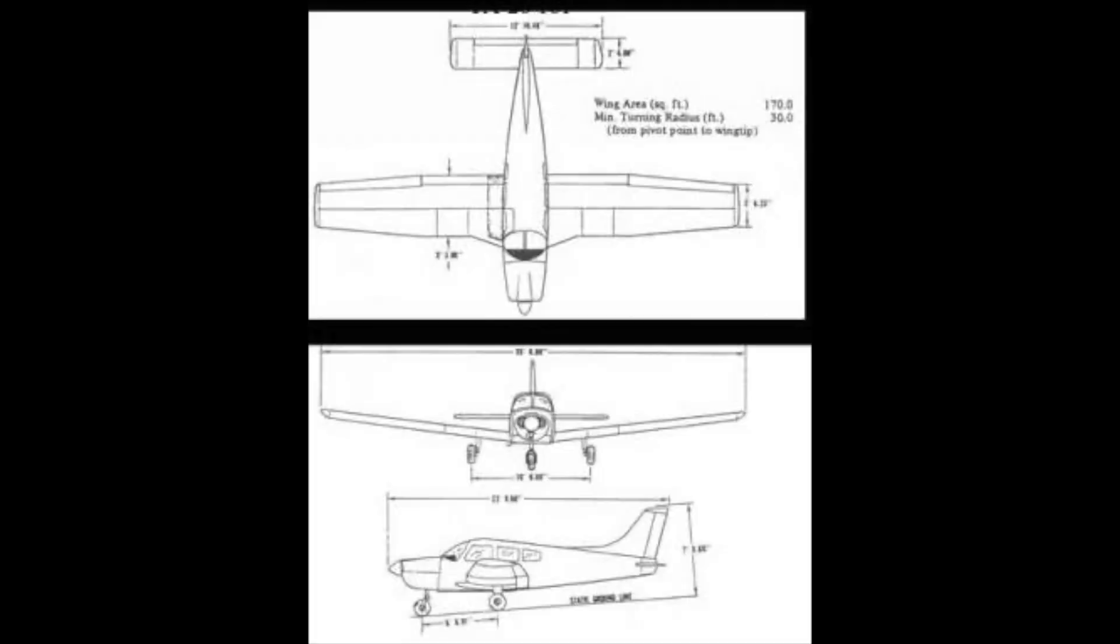With a tapered wing like the Piper Warrior has, ribs toward the wing tip have different dimensions than those at the wing root. Tapered wings might have a cosmetic appeal, but from an aerodynamic perspective, there are trade-offs to consider.